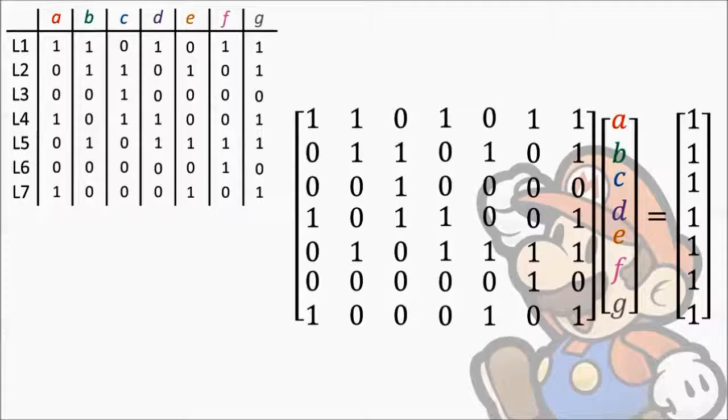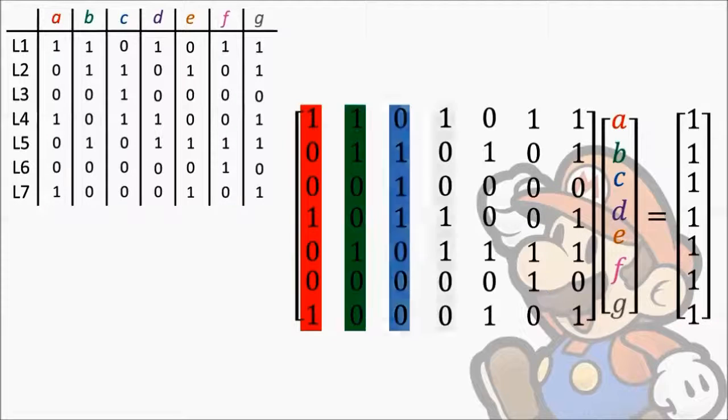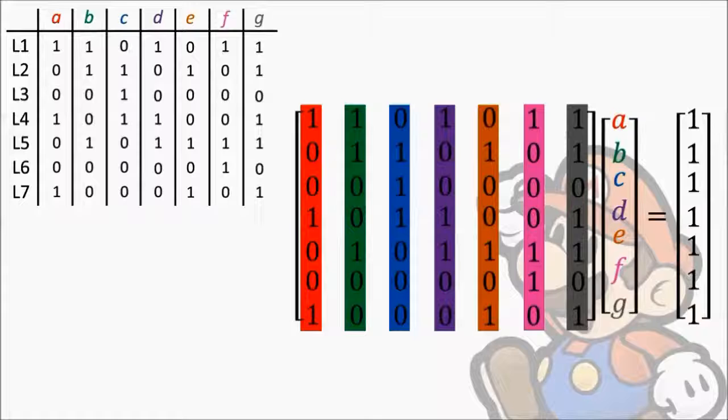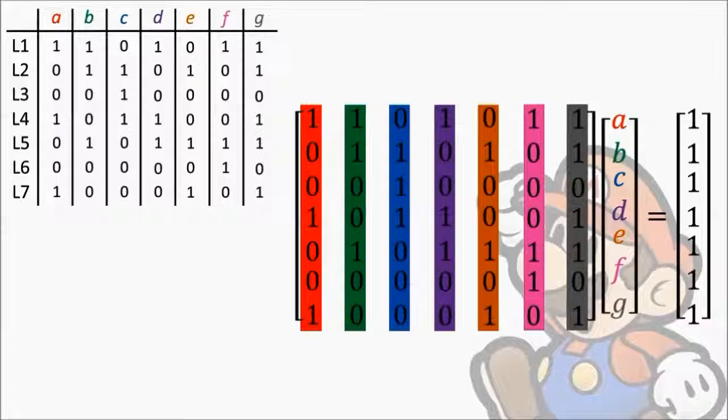Notice that the matrix is just a collection of seven column vectors. Each switch variable A, B, C, D, E, F, G has a corresponding column showing which lights it toggles. The first column is switch A, the second column is switch B, and so on. Each column represents one of the seven toggling patterns we saw earlier. Each row represents one of the seven equations that must be solved.